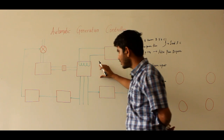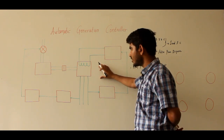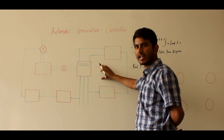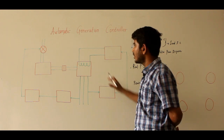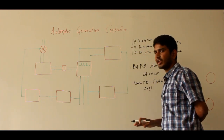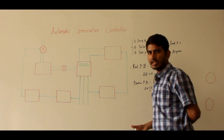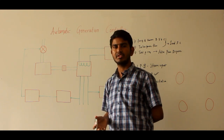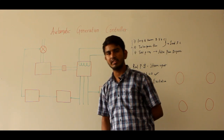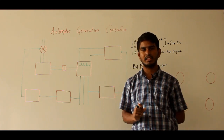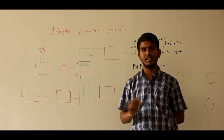I will talk about the parts — what are the things we are using in this diagram. This is the schematic diagram of your load frequency controller and excitation voltage controller. Before that, if I talk about a modern large-scale power system, or a modern interconnected power system, for proper management and control, we are dividing the large-scale modern interconnected system into several control areas.